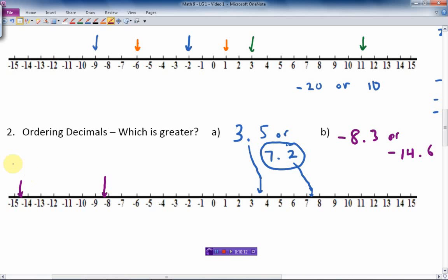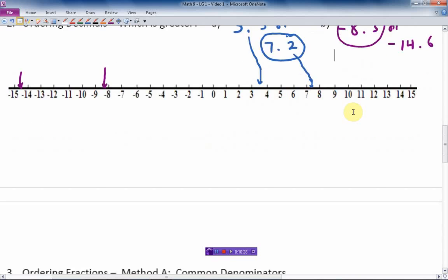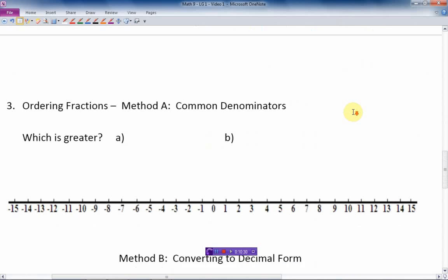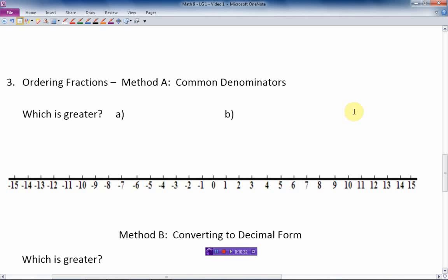Which is greater? Well, which one is to the right? And again, we find out that this one is to the right. Therefore, it's the greater number. Negative 8.3 is the greater. So decimals and integers are much the same as far as figuring out a number line. Which brings us to the last thing we're going to talk about today. Ordinary fractions.